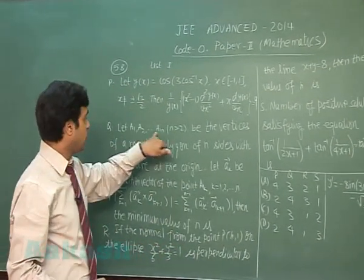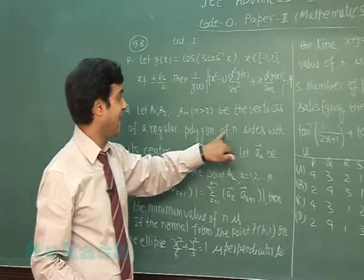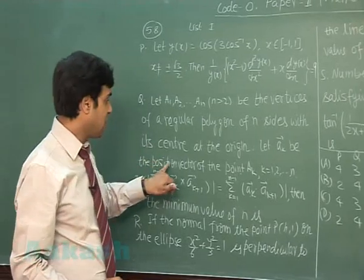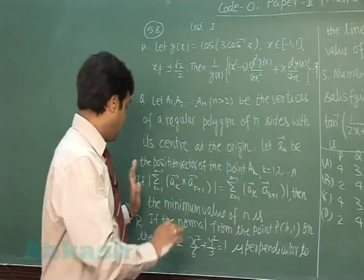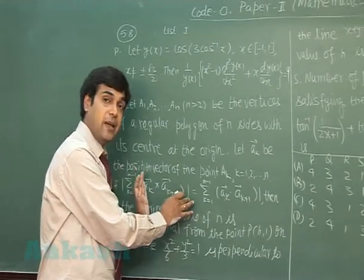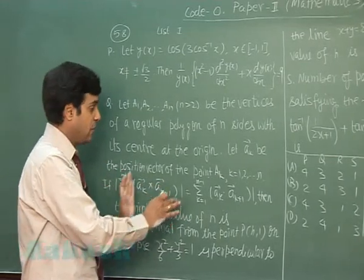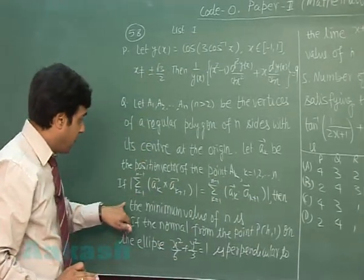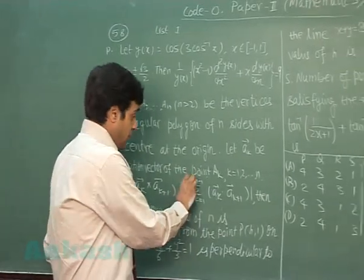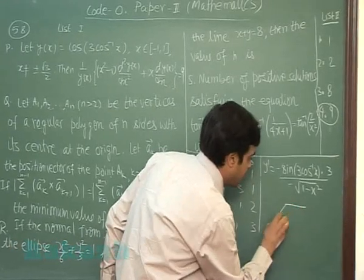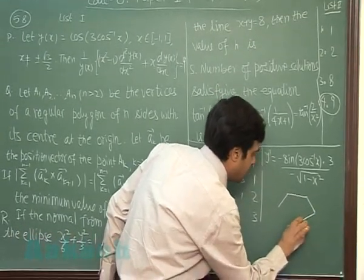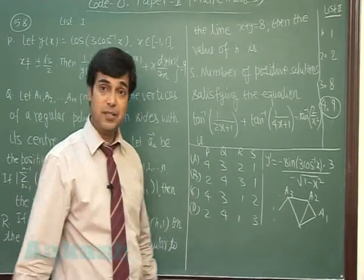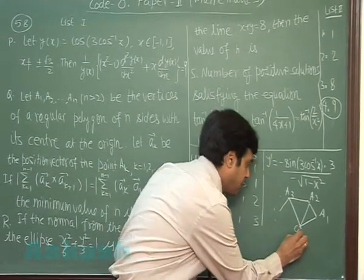Next, let a₁, a₂, … aₙ be the vertices of a regular polygon of n sides with its center at the origin. Let vector aₖ be the position vector of point aₖ for k = 1 to n. One constraint is given: the magnitude of the summation of (aₖ × aₖ₊₁) equals the summation of (aₖ · aₖ₊₁). We need to find the minimum value of n. Let's consider a₁, a₂, a₃, … as vertices with O as center.